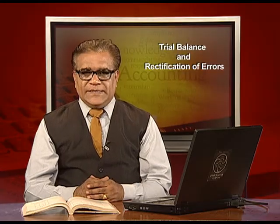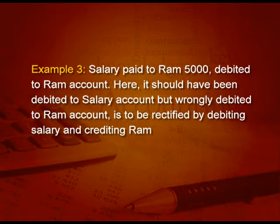Take another example of a double-sided error: salary paid to RAM 5,000 debited to RAM account. What is the right entry? Salary account debit and cash account credit. But what you have done is RAM account debit and cash account credit. So it should have been debited to salary account, but you have wrongly debited to RAM account. How to rectify it? Debit salary, credit RAM. RAM debit was wrong, so credit it; and you have not debited salary, so debit it. The entry is corrected and rectified.